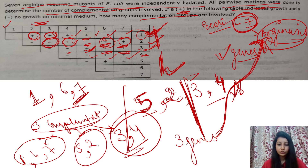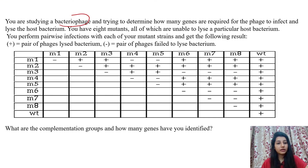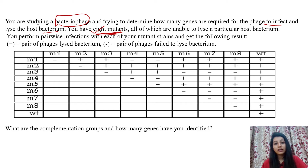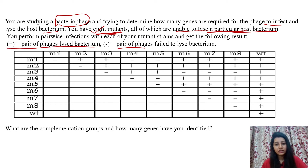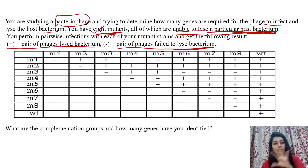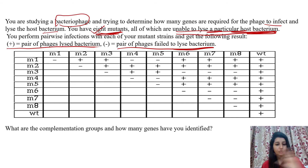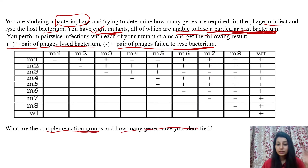Let's see one more example. In this question, we are studying a bacteriophage that infects a bacterium. Eight mutants have been taken that are unable to cause lysis of the bacterium. If positive, it is showing lysis; if negative, it is showing the mutated type — unable to cause lysis. You have to find out how many complementation groups are formed and how many genes are involved.